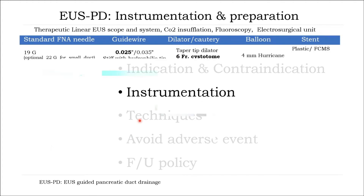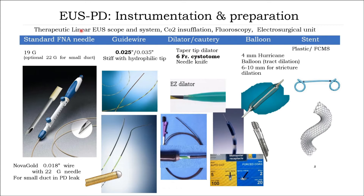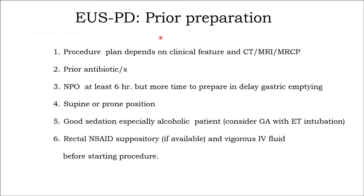For instrumentation, prepare a therapeutic linear echoendoscope, processor and sub-processor, fluoroscopy, electrosurgical unit. For access: a 19-gauge FNA needle is standard, with optional 22-G for small ducts. Also needed: a 0.025-inch guidewire, 6-French system for dilation or a tapered-tip dilator, 4 mm hurricane balloon for tract dilation, 6-10 mm balloon for stricture dilation, soehendra catheter for stricture dilation, plastic stents, and fully covered metal stents.